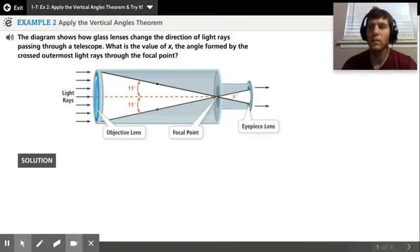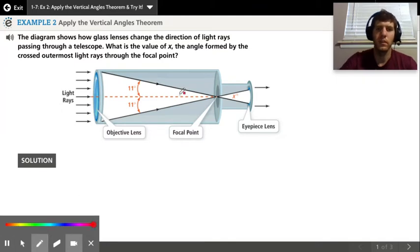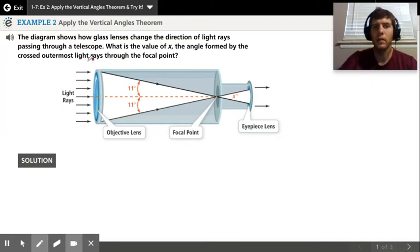Now we're using the vertical angle theorem for number two to solve for different angle measures. If we look at our example, the diagram shows how glass lenses change the direction of light rays passing through a telescope.